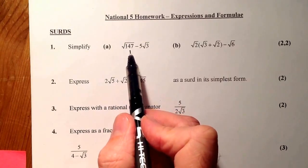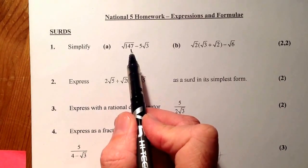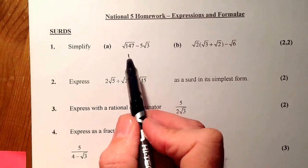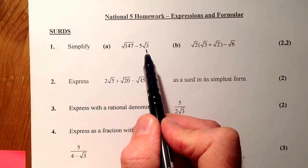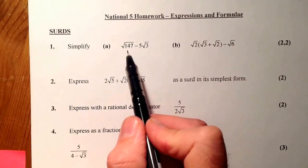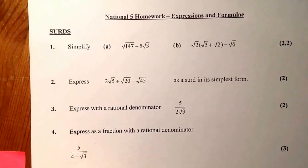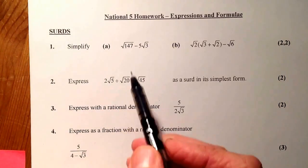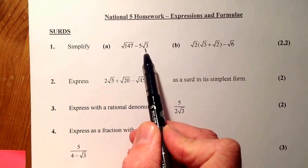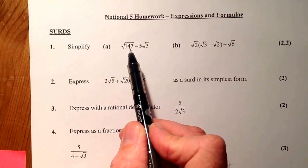Usually when I simplify surds, what I'm looking to do is find two numbers that multiply together to get 147, where one of them is a square number. The root 3 gives me a clue. When adding and subtracting surds, they're similar to fractions — I can only add or subtract when the root number is the same.